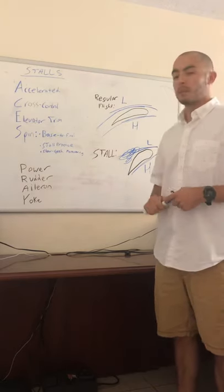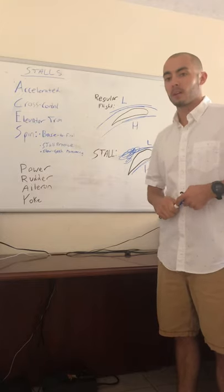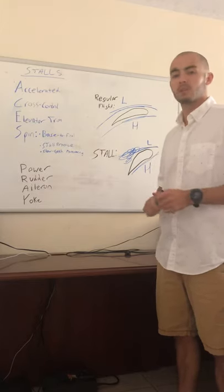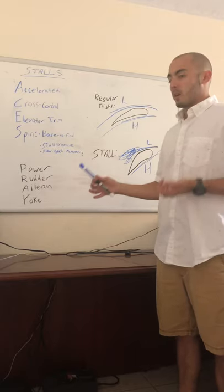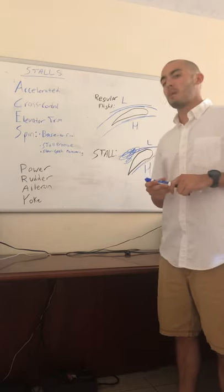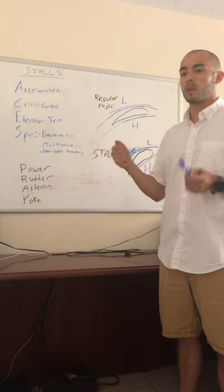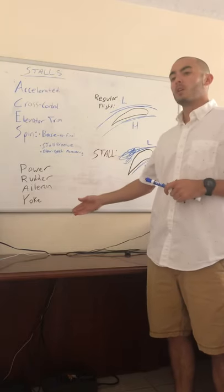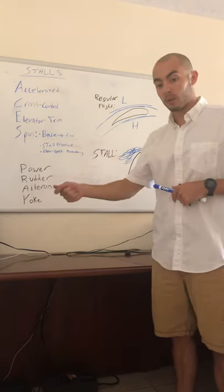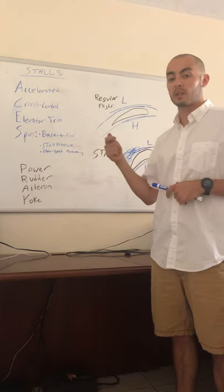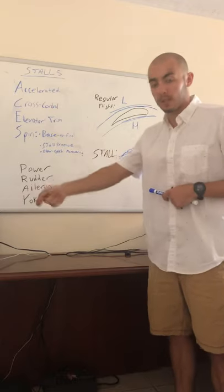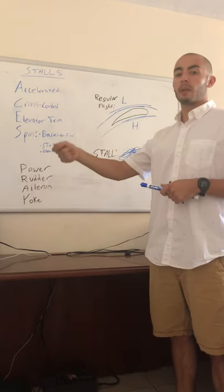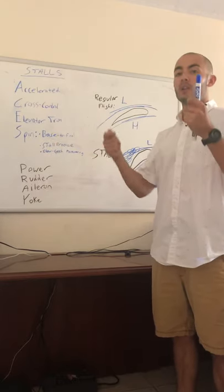Aileron - you want to keep them neutral. Obviously you don't want to be banking through a stall, you want to keep it nice and neutral. And then for your yoke, you want to push forward, which the first tendency is to pull back because you're looking at the ground. You want to go forward because you are in a stall and you want to break that stall. Then go ahead and properly recover from it, start bringing the nose up and adding in power as you need it, as you'll be very slow.